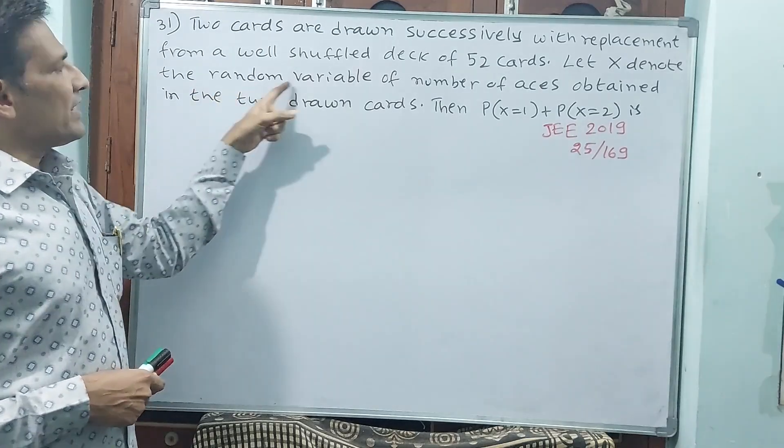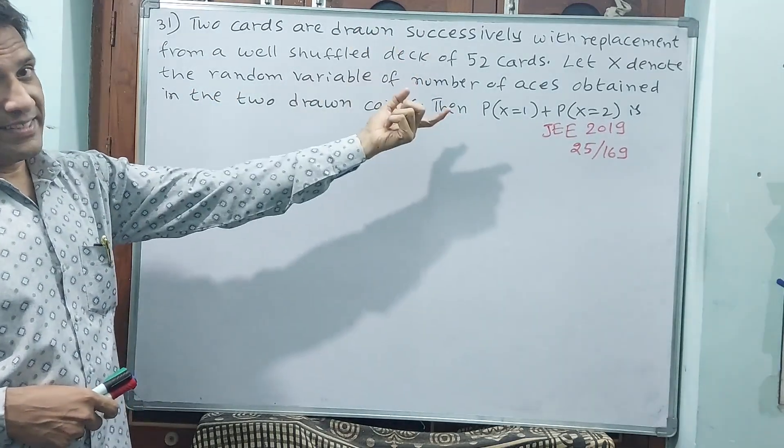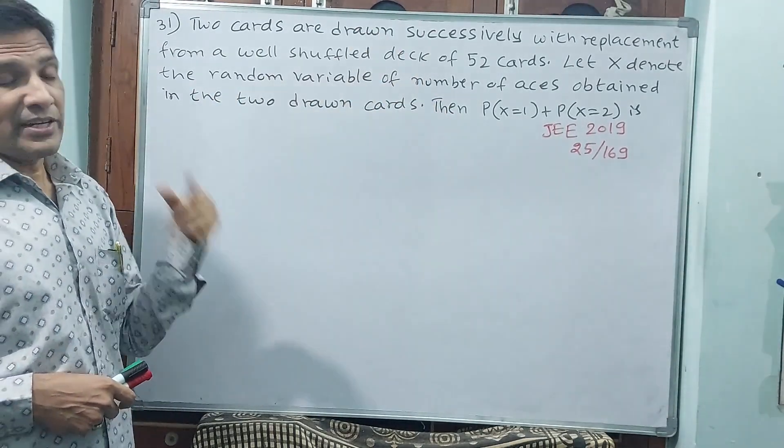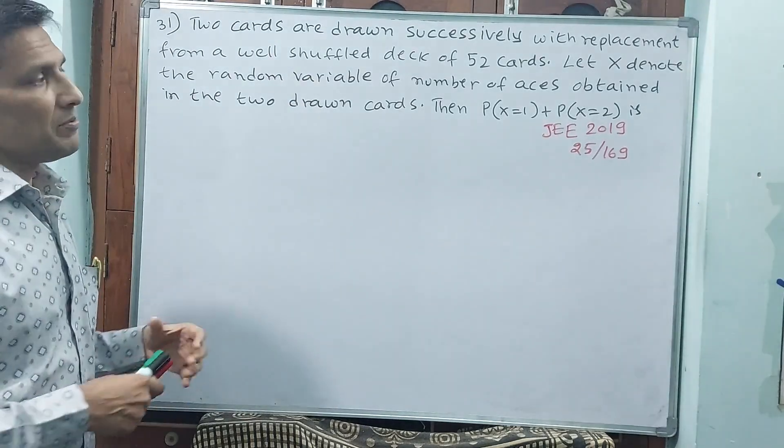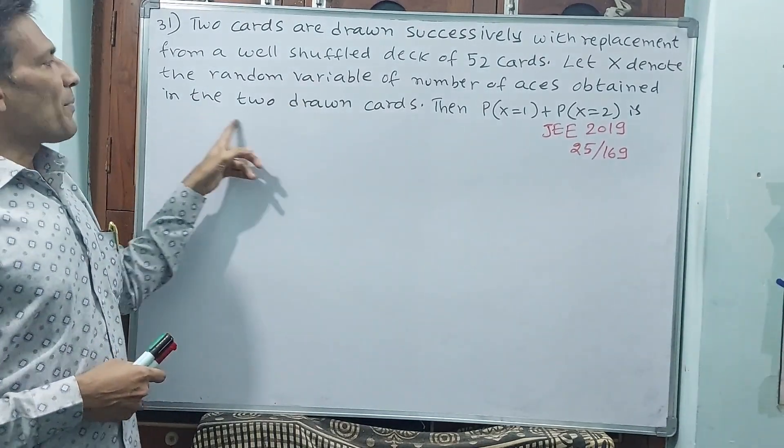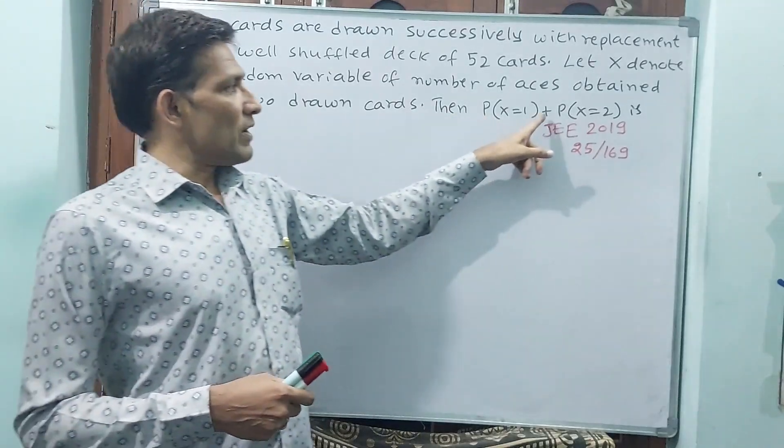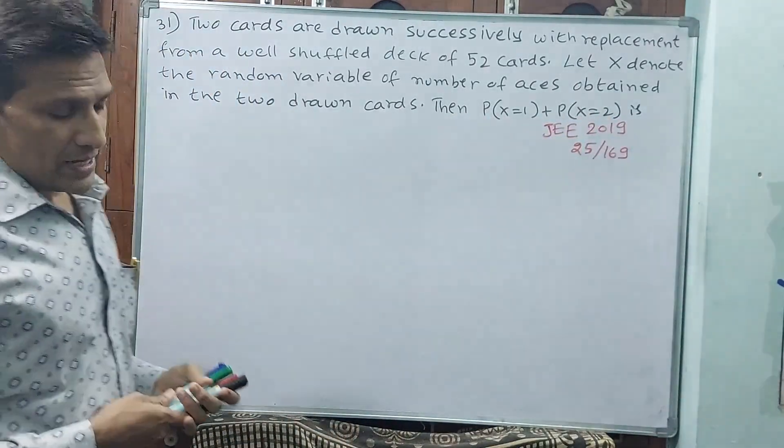Let X denote the random variable of number of aces. See, in each set one ace will be there. Total 4 aces will be there. Obtained in the drawn cards, then P(X=1) + P(X=2) is how much?